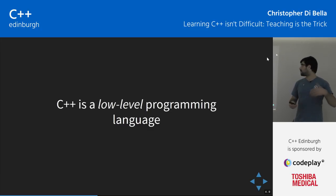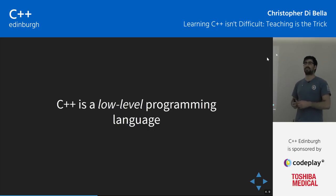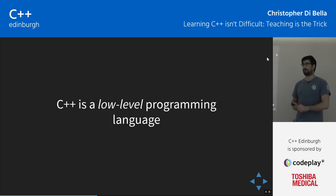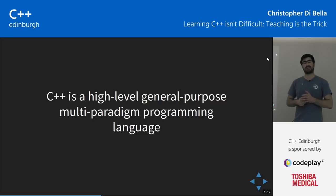Saying C++ is low-level is going to scare away a lot of people. When I was at uni I overheard a student taking an embedded systems course who was never going to touch anything to do with C, C++, or assembly ever again — because they were scared off by the term 'low level.' So let's move on to something more generic: C++ is a high-level, general-purpose, multi-paradigm programming language. This is what Wikipedia classifies C++ as.